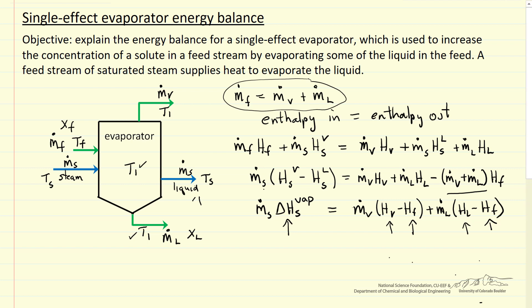The only other equation in terms of energy balances is that the rate of heat transfer between the steam and the liquid equals the flow rate of steam times the heat of vaporization of the steam. That's going to be equal to the overall heat transfer coefficient times the area for heat transfer times the temperature difference, T_steam minus T_evaporator.